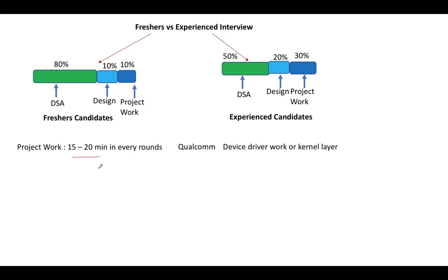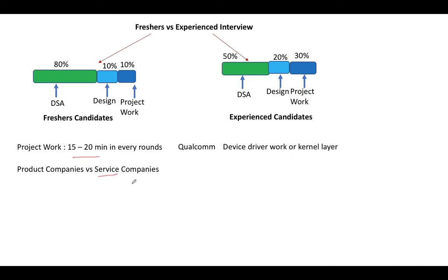If you apply to a service company versus a product company, the pattern of questions will be slightly different. Most of you already know what service and product companies are. In short, companies that develop their own products are product companies — like Microsoft with Windows or Google with its search engine. Service companies are those that provide services to other companies, like TCS or Infosys.